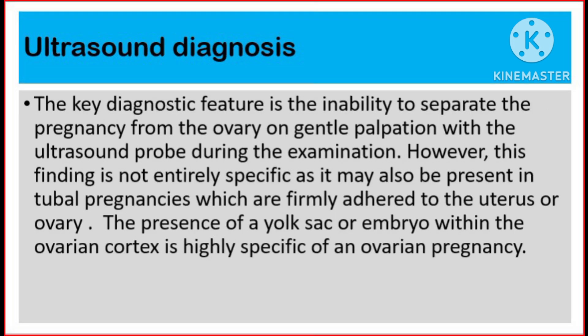The key diagnostic feature is the inability to separate the pregnancy from the ovary on gentle palpation with the ultrasound probe during the examination. However, this finding is not entirely specific, as it may also be present in tubal pregnancies which are firmly adherent to the uterus or ovary. The presence of a yolk sac or embryo within the ovarian cortex is highly specific of an ovarian pregnancy.